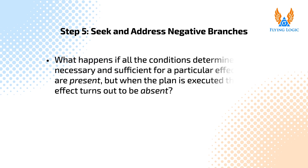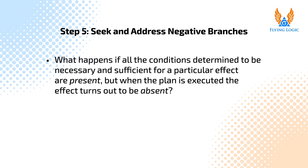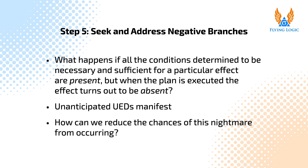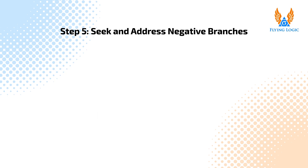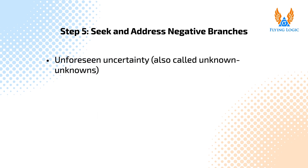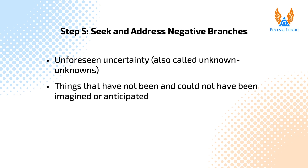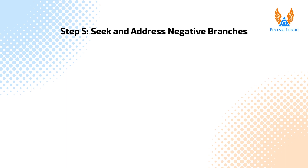Finally, what happens when all the conditions determined to be necessary and sufficient for a particular effect are present, but when the plan is executed the effects turn out to be absent? What if some other undesirable effects we didn't anticipate manifest? This is the case of an unforeseen uncertainty, also called unknown unknowns — things that have not been and could not have been imagined or anticipated. In this case, there can be no predetermined contingency plan, but there are some things we can do to prepare.